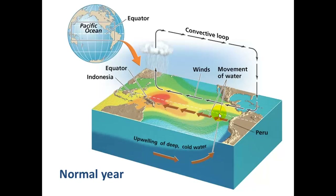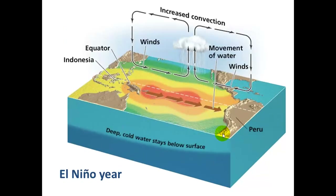Here's another diagram of El Niño showing the same concept, and upwelling is shown here. During an El Niño year, it's really bad for the fishermen in this area because those fish dwindle — they're not getting the nutrients they need from the deep waters. Or more technically, the phytoplankton they eat are not getting those nutrients.